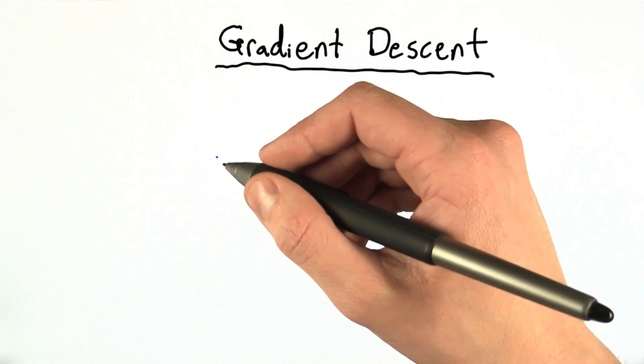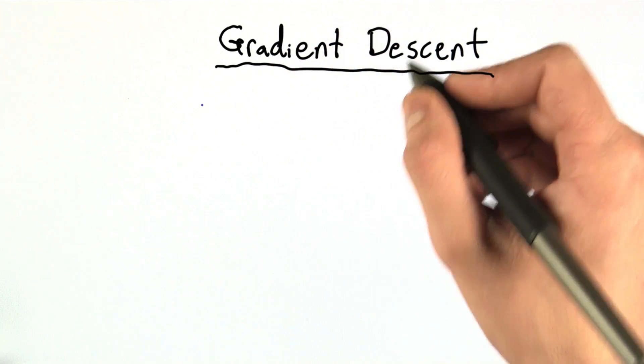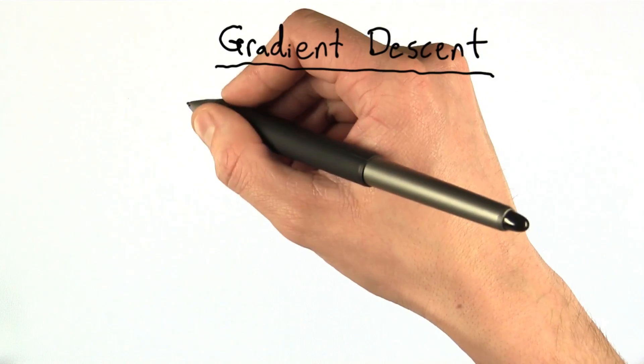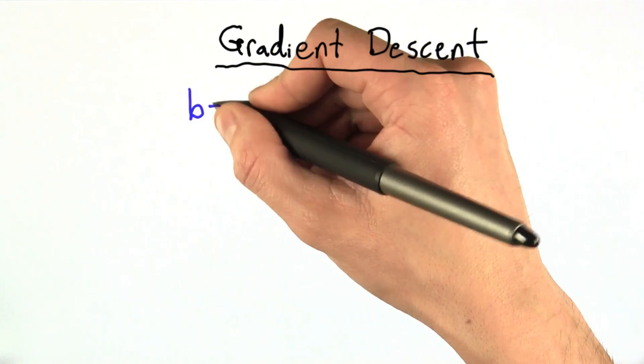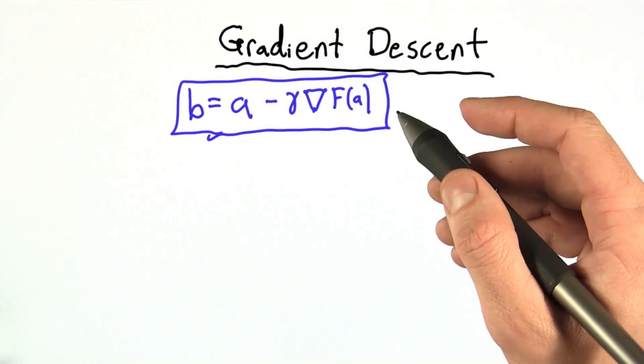For those of you who looked at Wikipedia to try to understand what's going on with gradient descent, the first formula you would have encountered was this one. And this equation describes gradient descent.